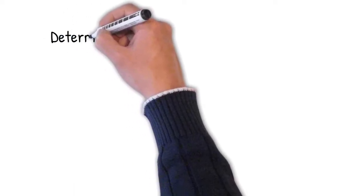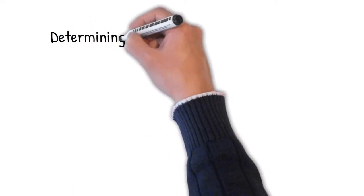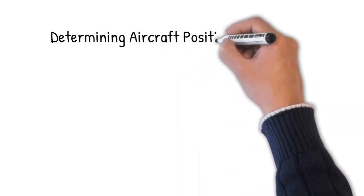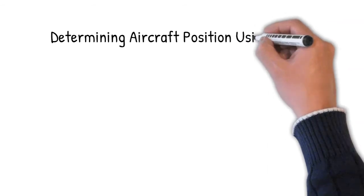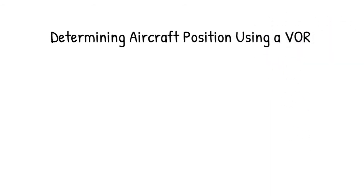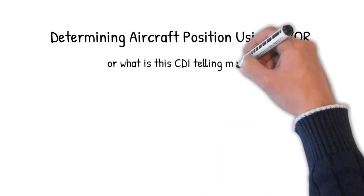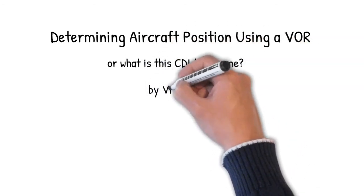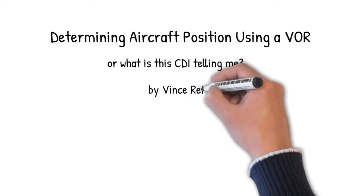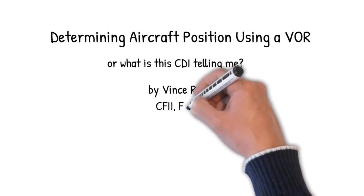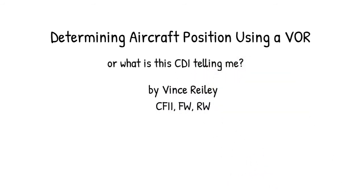Hey folks, this is Vince Riley, CFII, fixed wing and rotor wing. I have students, co-workers, and friends approach me all the time asking me to help demystify the VOR and how to determine position using the OBS and the CDI, sometimes during either a checkride or a written exam. So I'm going to take a few minutes with these illustrations to demystify the whole process of determining where your aircraft is in relation to a VOR. Basically, this presentation is for future private pilots that just haven't mastered the instrument skills or seasoned pilots that just need a quick review.